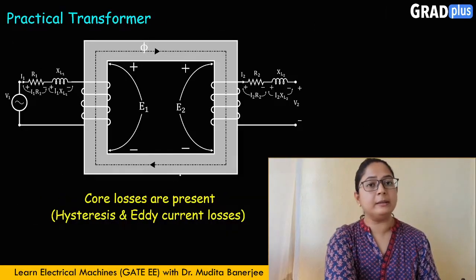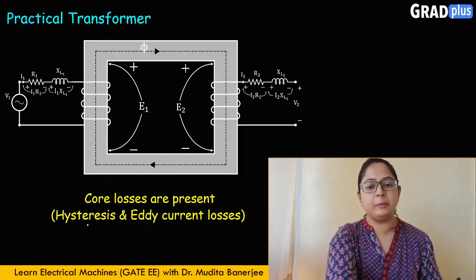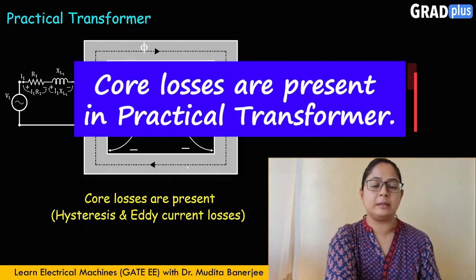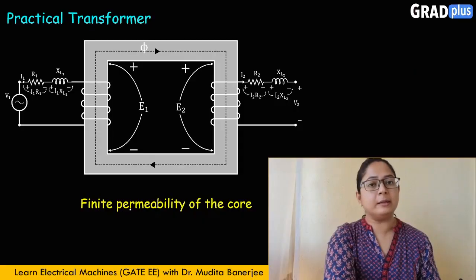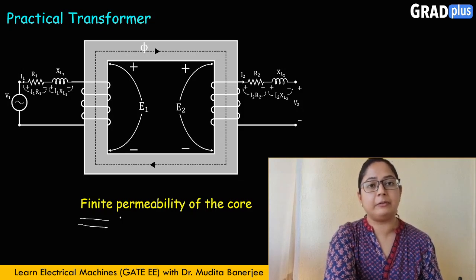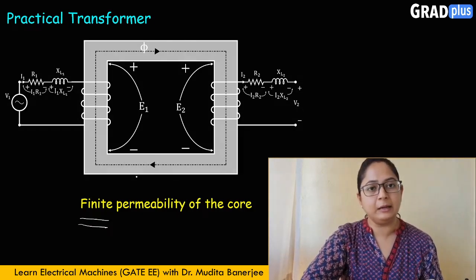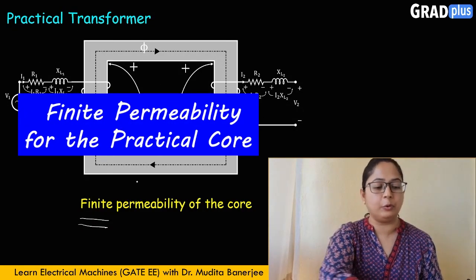The third point is core losses are present in the transformer — meaning hysteresis loss and eddy current loss are both present, which decreases the efficiency. The fourth point is the permeability of the core is not infinite; there is a finite permeability. Therefore, there is some value of magnetizing current which creates a flux in the core.